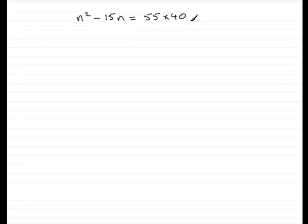Well, if you look closely, what you can see is that you can factorize the left-hand side as n multiplied by n minus 15. Just pull out that common factor of n. And so that equals 55 times 40.